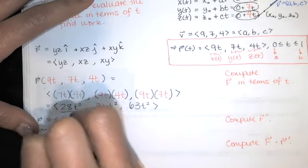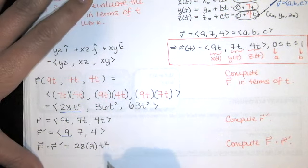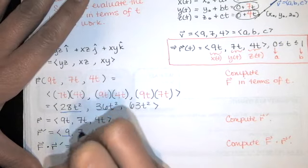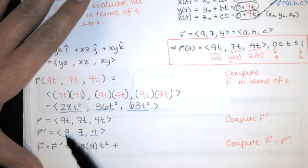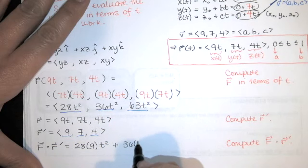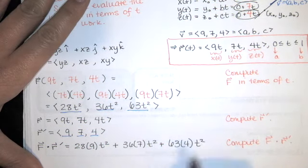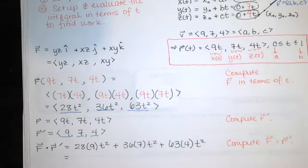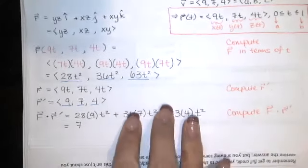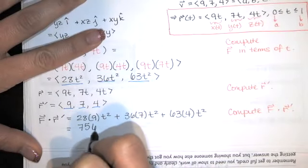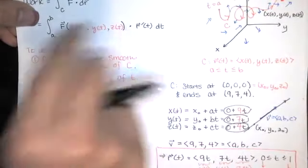Now we want to compute that dot product, which will be our integrand. Remember how we compute dot products. It's this times this, x component times x component. You have 28 times 9t squared. Plus this times this, plus this times this. Dot products always yield scalars. So I've got 28 times 9 times t squared, plus 36 times 7 times t squared, plus 63 times 4 times t squared. That's just a number times t squared. And in this case, that's 756. So I've got 756 t squared. That's my integrand.